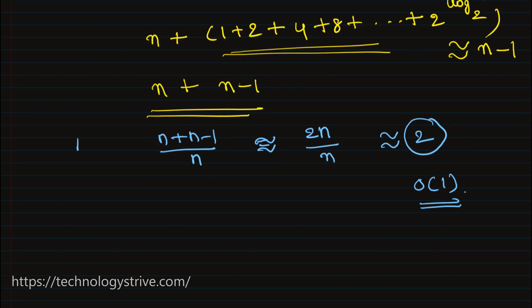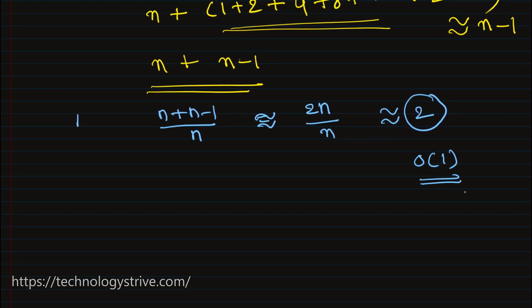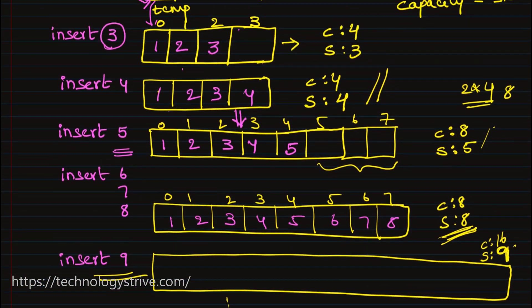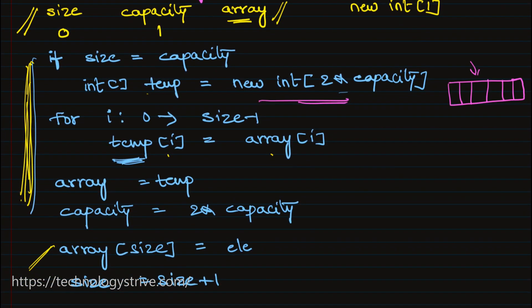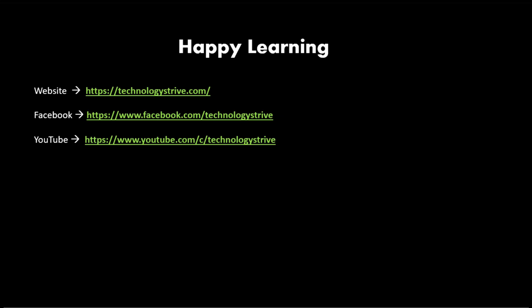This is how we achieve constant amortized time complexity for adding elements to a dynamic array. Similarly, the delete operation also achieves amortized O(1). In this video we only covered how the add operation works and how the array grows. In the next video, we'll write the algorithm for delete operation and implement both add and delete in Java. Thank you for watching — stay tuned.